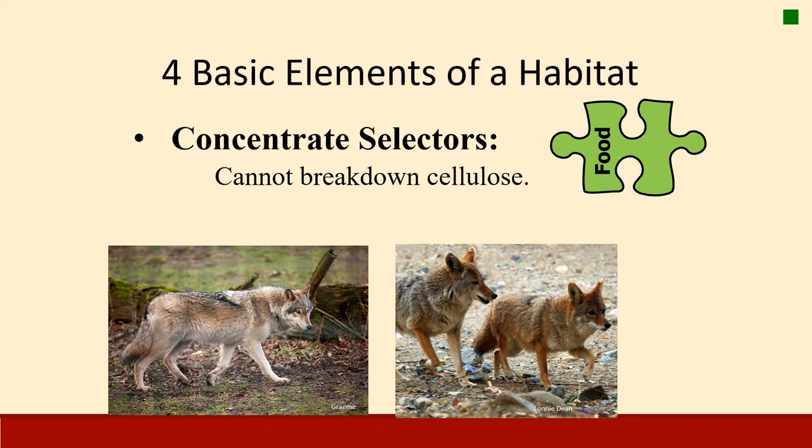Another type of concentrate selectors are carnivores, or meat eaters. Carnivores cannot break down cellulose, so they get their energy and nutrients from preformed compounds — that is, meat. They search, hunt, and consume other animals to get their energy.